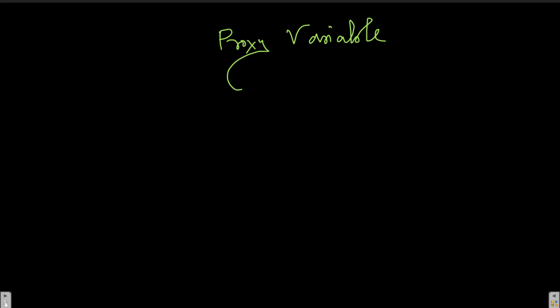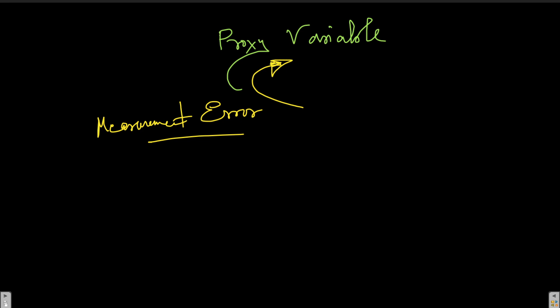Measurement error occurs because we do not have values for the exact variable that we are looking for. Because we do not have values for the exact variable, what we use is a proxy variable. And because we use a proxy variable, we leave out some of the part that we actually want to measure from that exact variable. Let me explain that with an example.